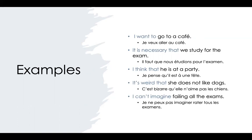And then the debated one: 'I think that he's at a party' — this takes the indicative, je pense qu'il est en fête. 'It is weird that she does not like dogs' — this is the subjunctive: c'est bizarre qu'elle n'aime pas les chiennes. And lastly, 'I can't imagine failing all the exams' — je ne peux pas imaginer rater tous les examens. You can see how it's conjugated in the translation.